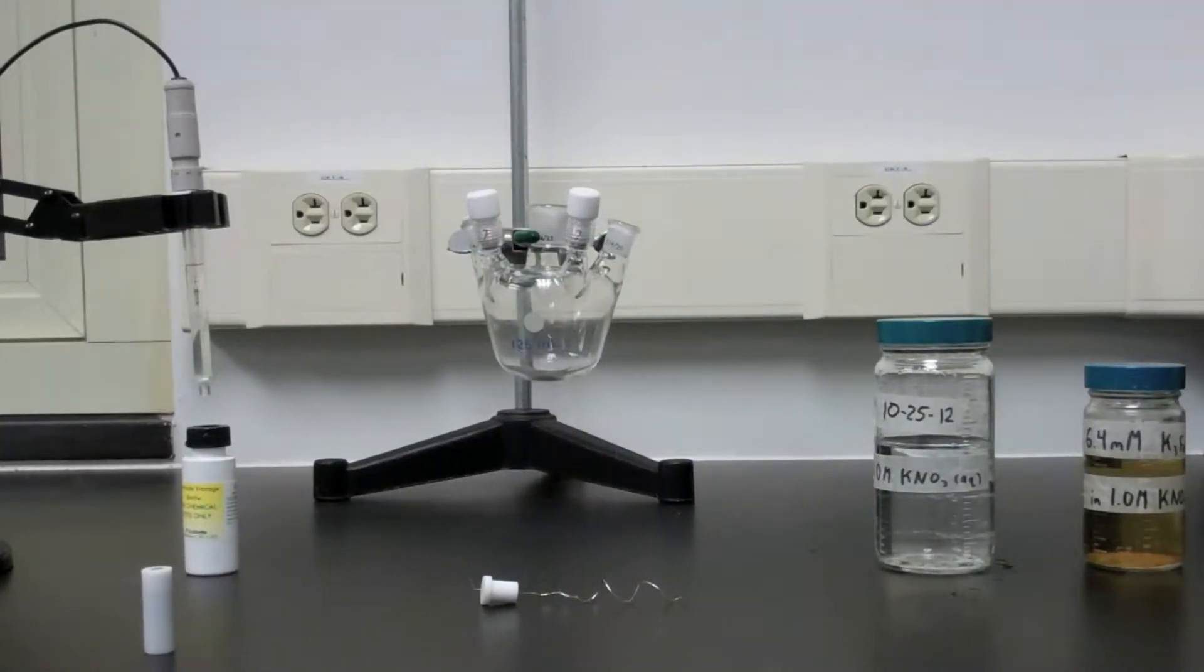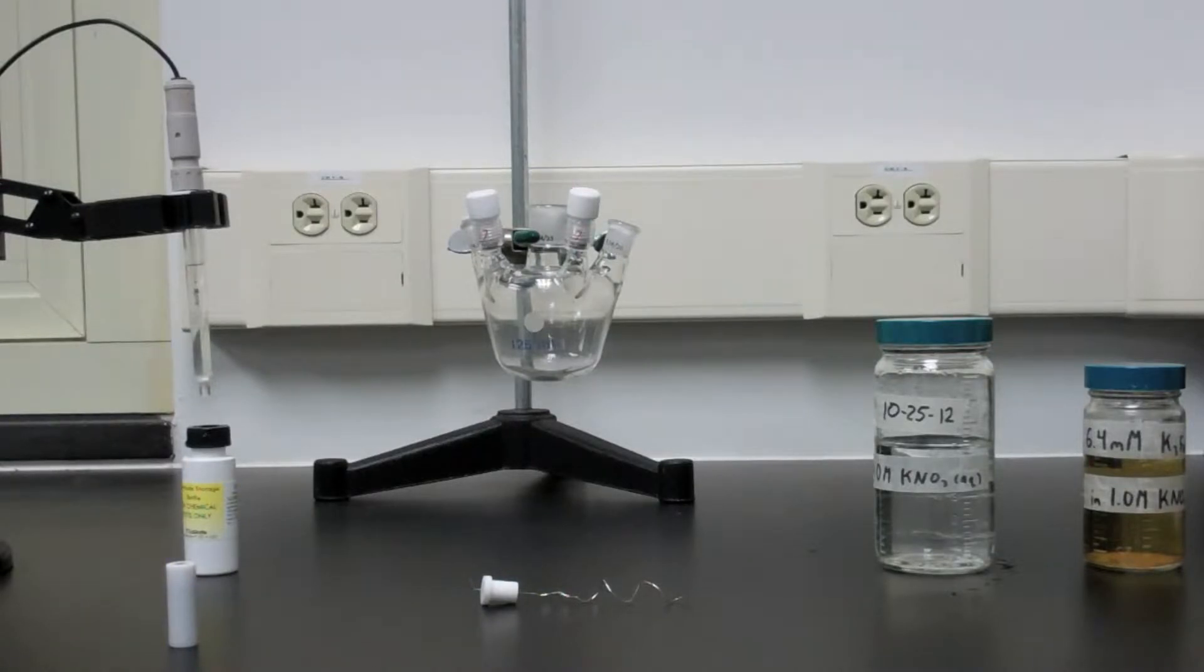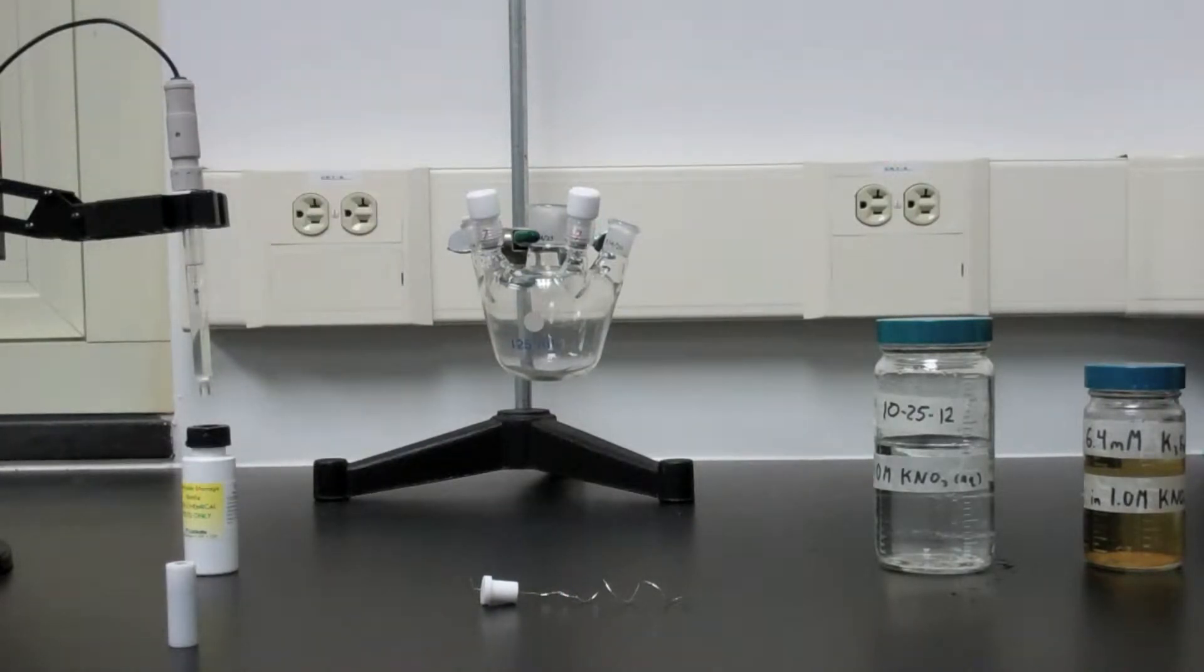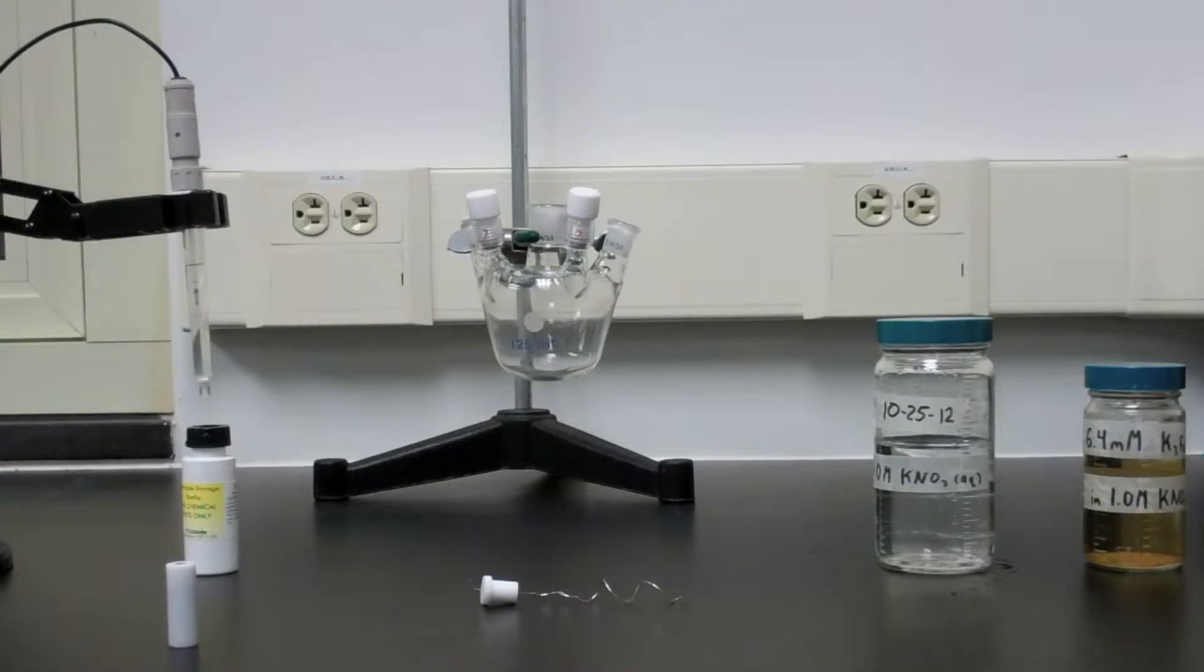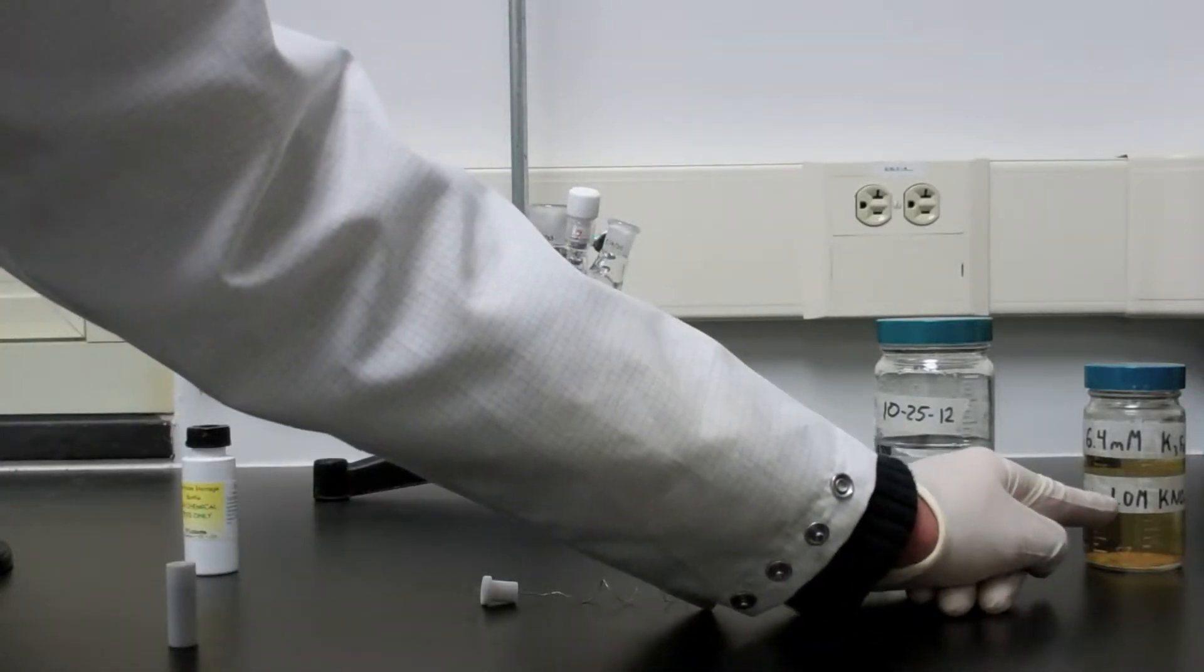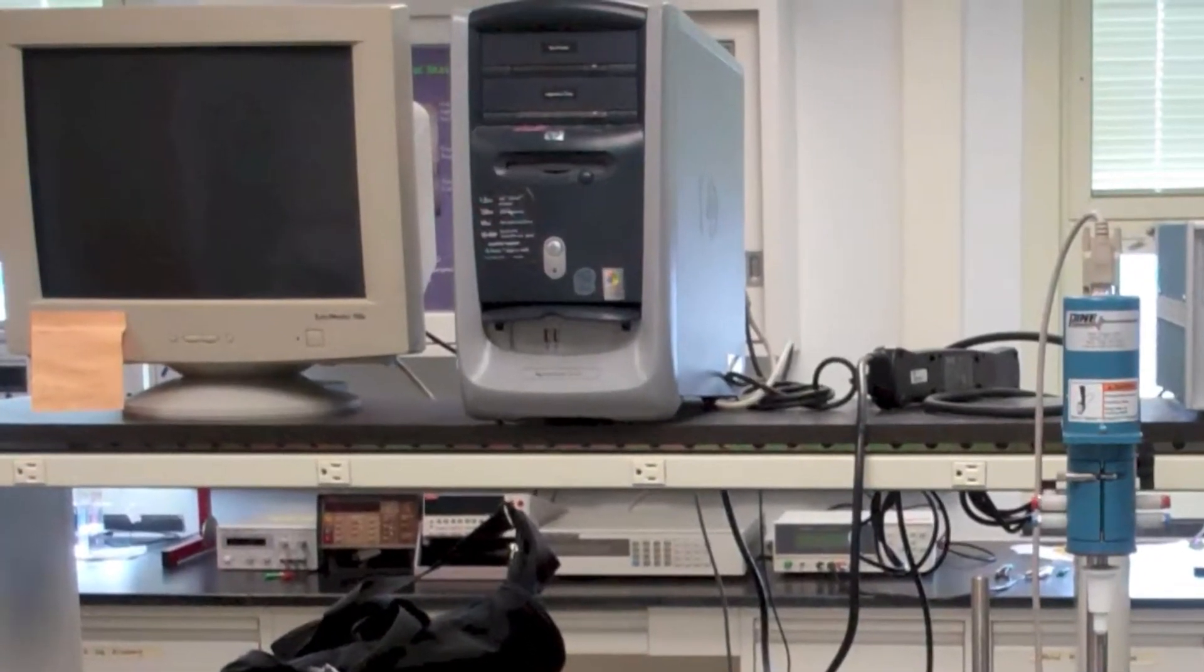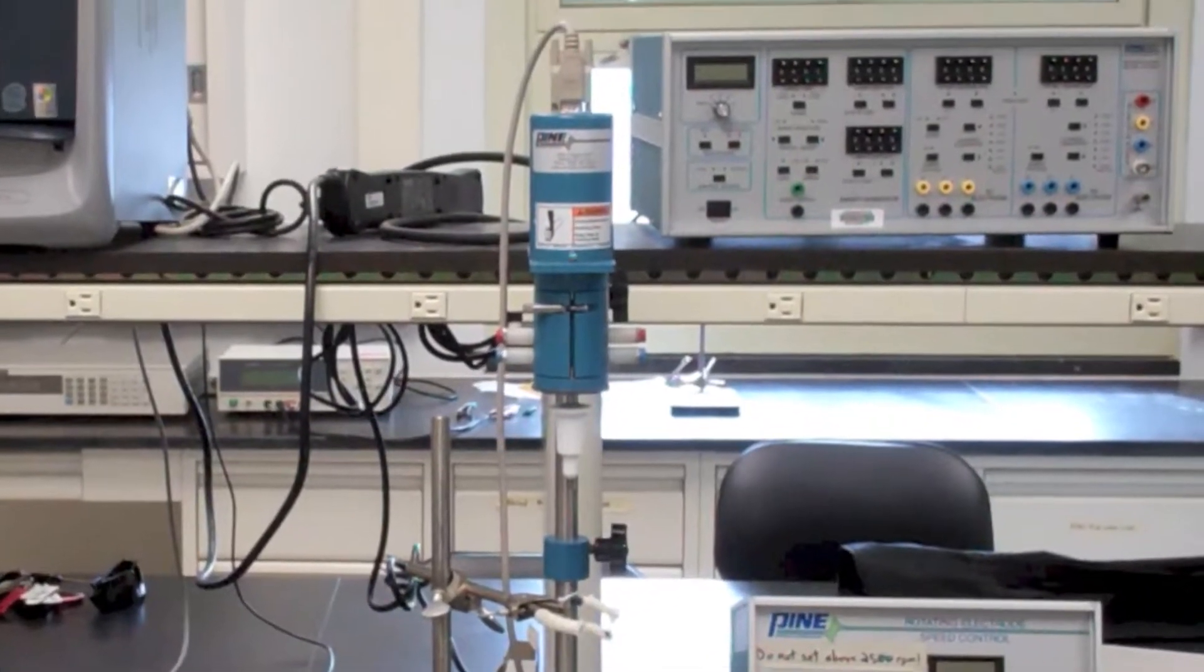For this lab you will need a polished platinum working electrode, a platinum counter electrode, a glass frit calomel electrode, a glass multi-port reaction vessel, one molar aqueous potassium nitrate solution, 6.4 millimolar potassium ferrocyanide in one molar aqueous potassium nitrate. You will also need a computer to communicate to the bipotentiostat, a working electrode module, and a bipotentiostat.